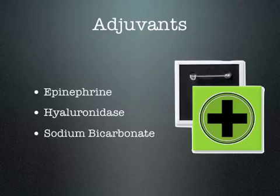The concept to remember is that the anesthetic agent needs to be in the unionized state to cross the nerve membrane and act. At a higher pH, less concentration of the anesthetic will be in the ionized state and more will be in the non-ionized state, which allows it to cross into the nerve more readily and prolongs the action of the anesthetic.